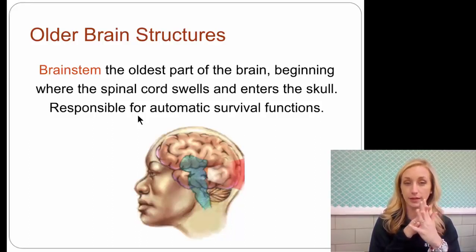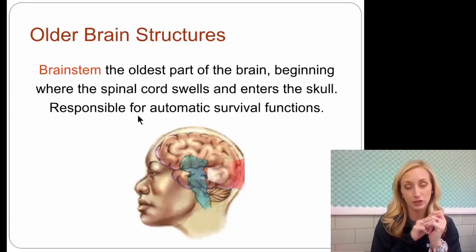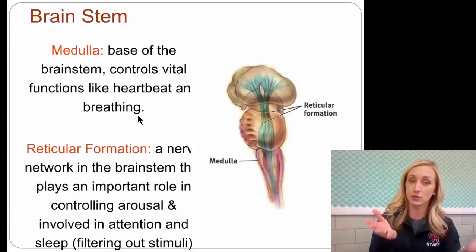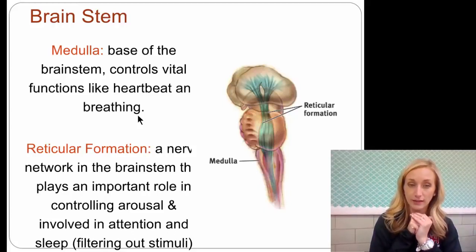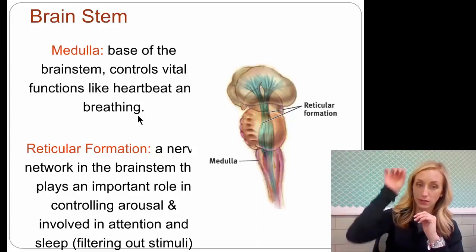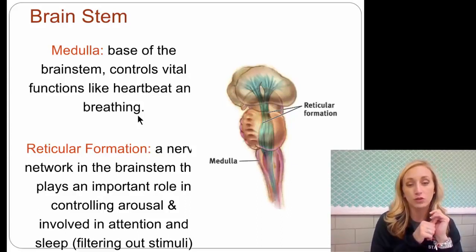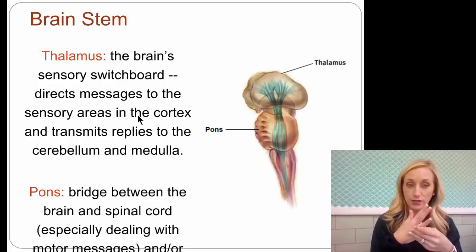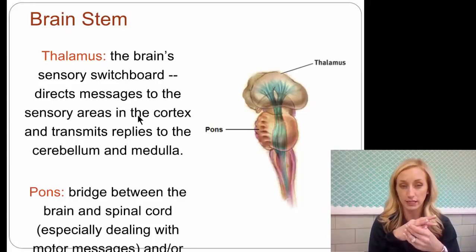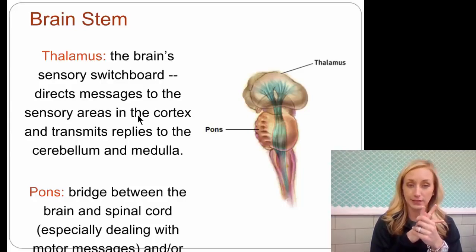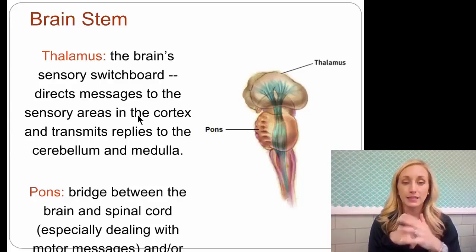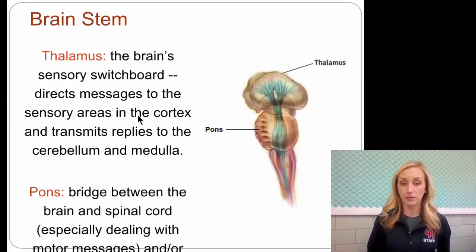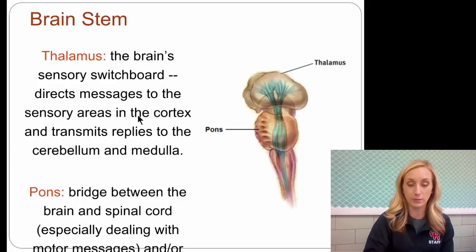The brain stem is the oldest part of the brain, beginning where the spinal cord swells and enters the skull, responsible for automatic survival functions. The medulla controls vital functions like heartbeat and breathing. The reticular formation, the nerve fibers up the back of the brain stem, plays an important role controlling arousal, attention, and sleep. The thalamus at the top is a sensory switchboard that directs messages to the sensory areas in the cortex and transmits replies to the cerebellum and the medulla. The pons is the bridge between the brain and spinal cord, especially dealing with motor messages, but also involving sleep and breathing.